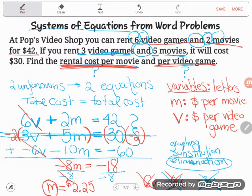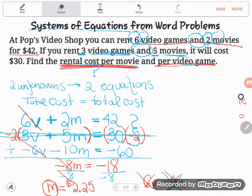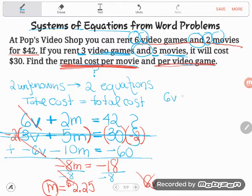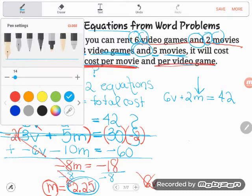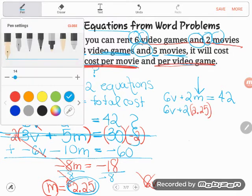Now you might say, well, that was only part of the answer. They asked me to find the rental cost per movie, but they also asked me to find the rental cost per video game. Well, now that you know one thing, you can use it to find the other. So let me erase this so I have some room to write. And we are going to pick up one of our old equations. You say, which one of our equations? Does not matter a bit. I don't care. Let's go with the first one just because it was the first thing I saw. So 6 video games plus 2 movies equals $42. Now that I know how much a movie costs, I can put that into the equation and solve for V, the cost of the video game.